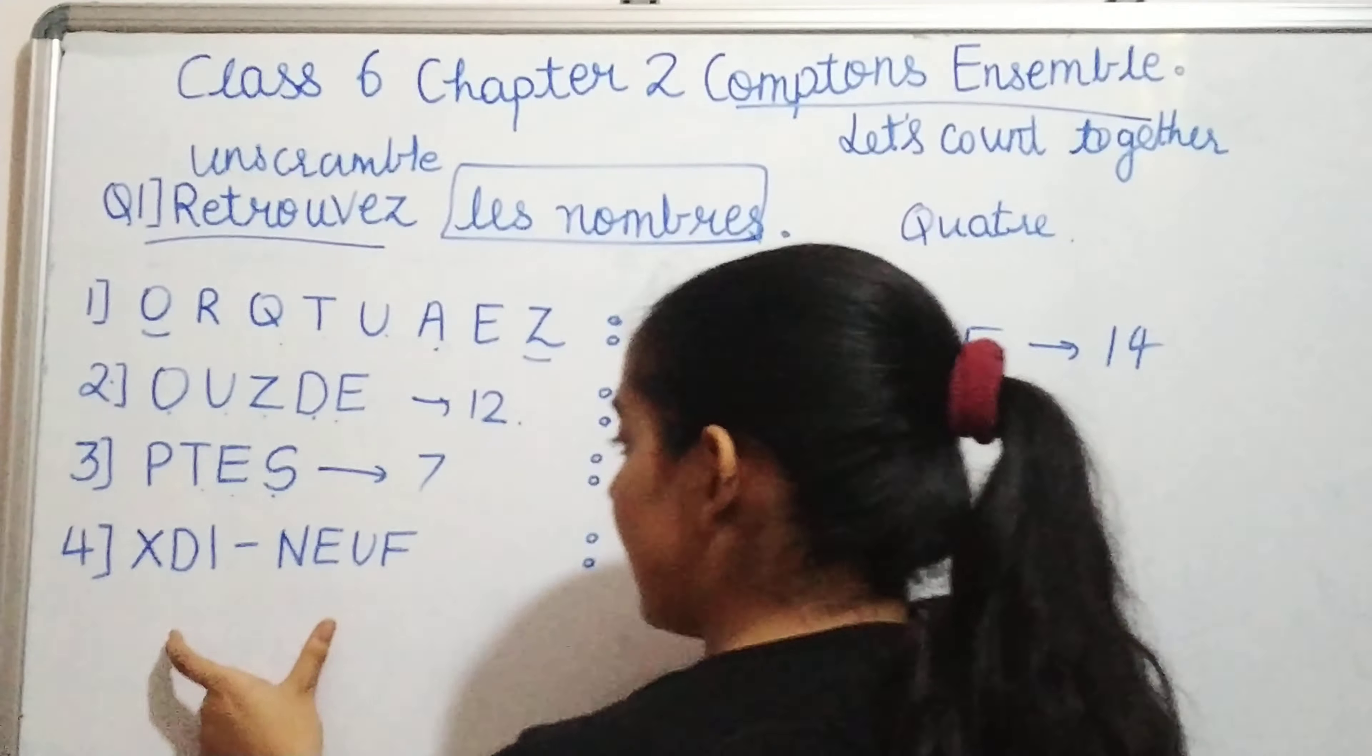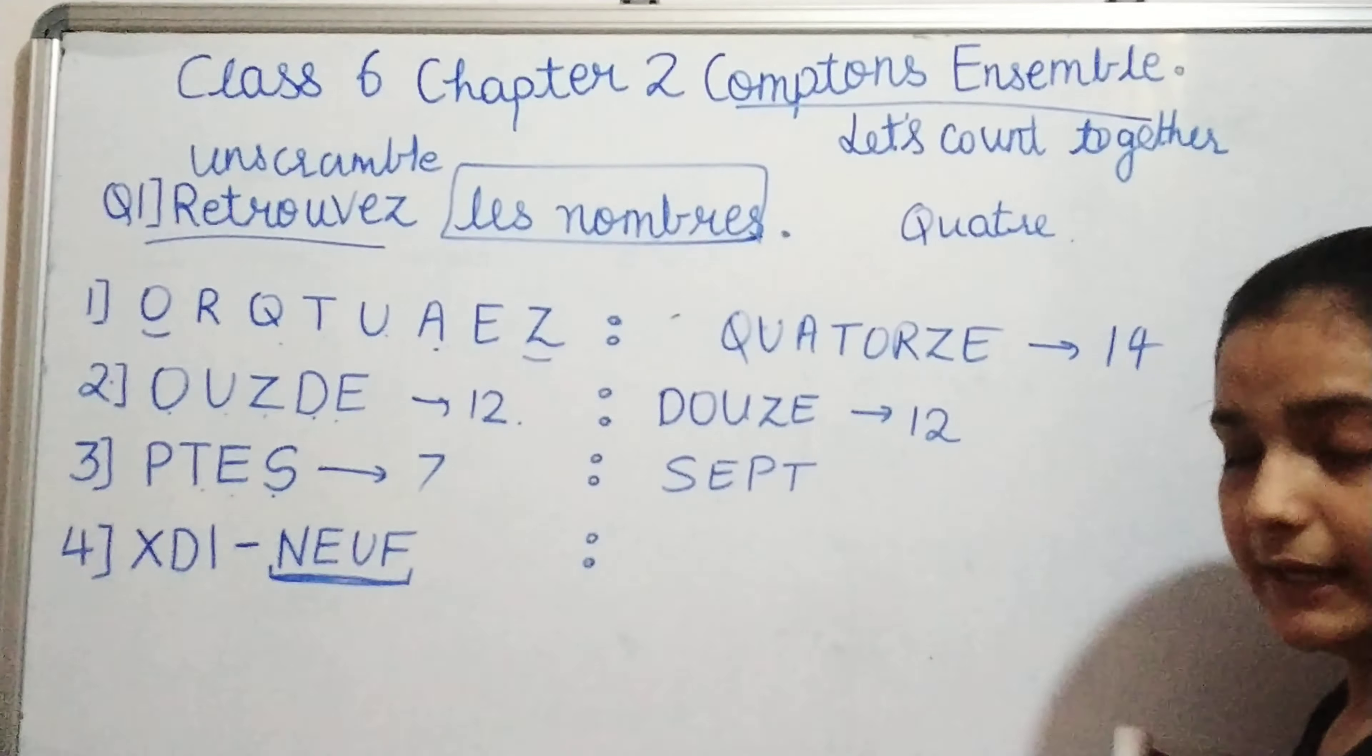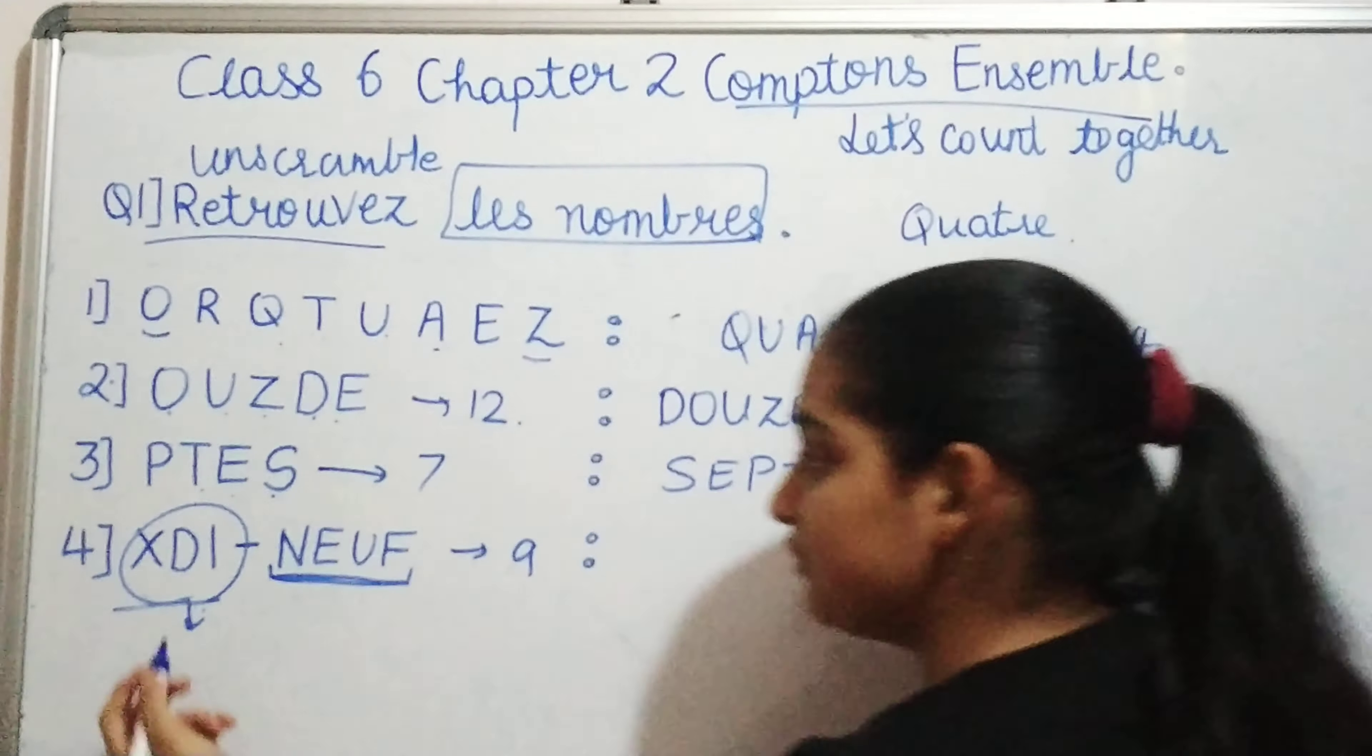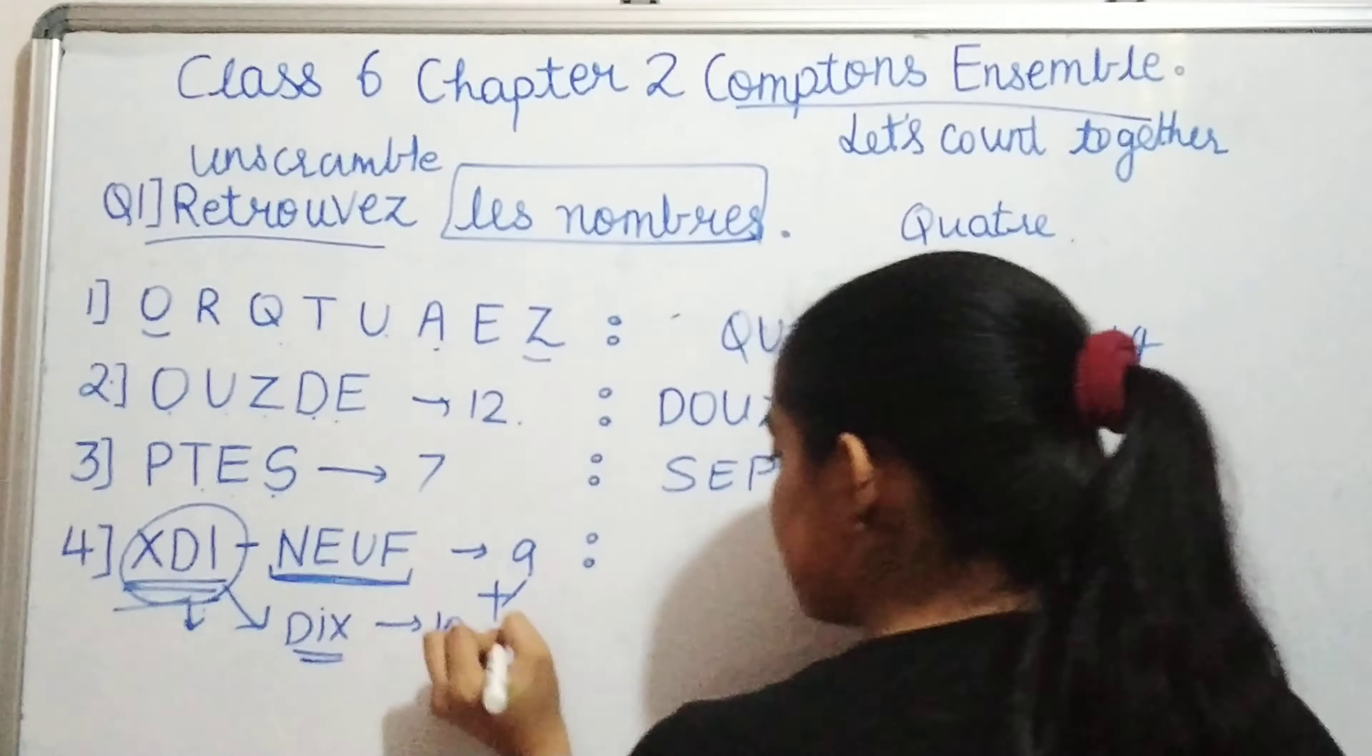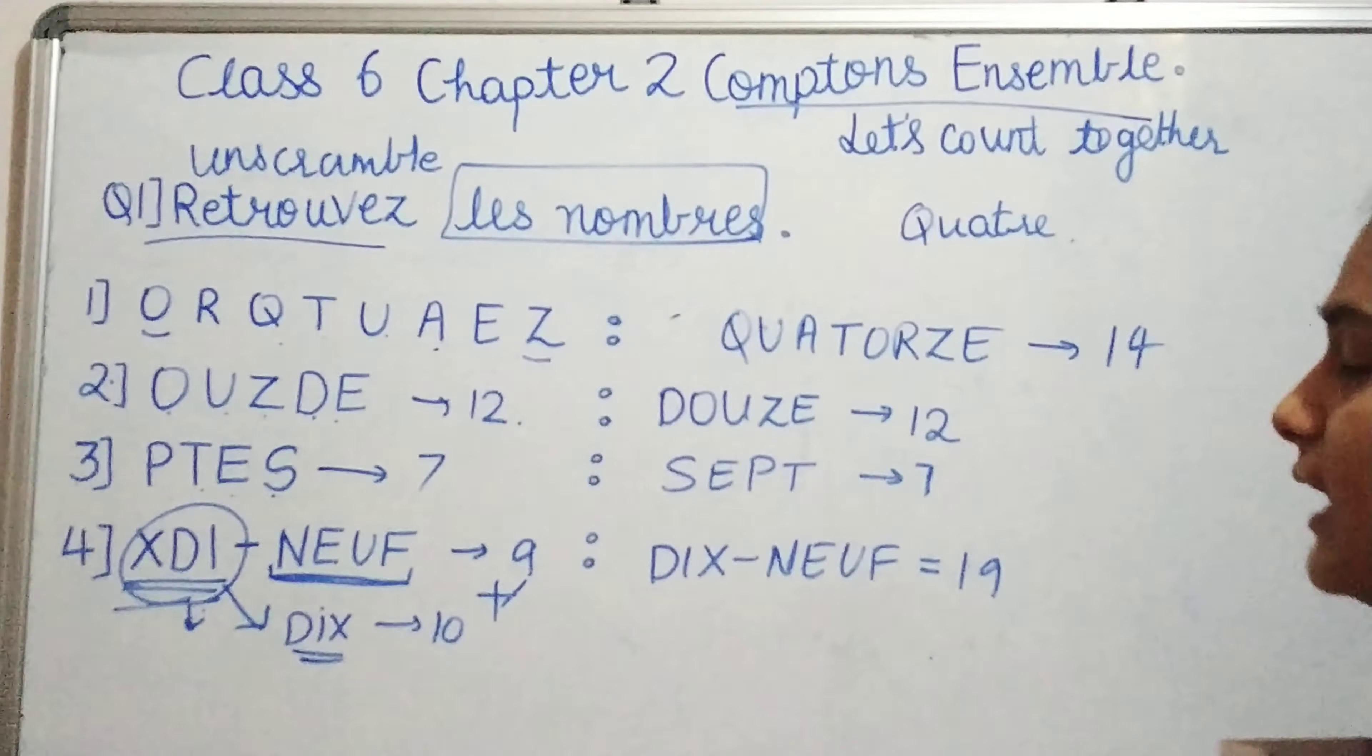Now, seeing the last one, that is X, D, I, N, E, U, F. Here we are simply given the unscrambled word. This is 9, and these are just 3 digits or 3 alphabets. So this is simply D, I, X which is 10. So, this is 10 plus 9, that is 19, and this would be dix-neuf, which means 19. So here we are done with the first question.